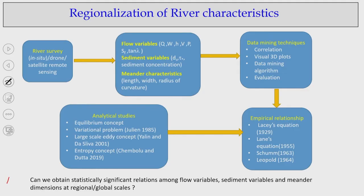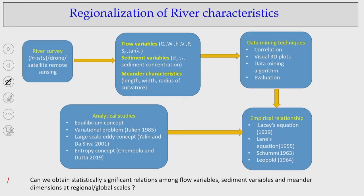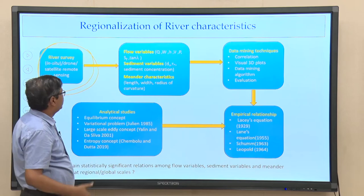Looking at the last slides again, the basic knowledge concerns how things move. One approach is river survey, which we can do at the field level, through drone-level studies, or using high-resolution satellite imagery to understand river planforms, how river meandering geometries look, and the river corridor associations.